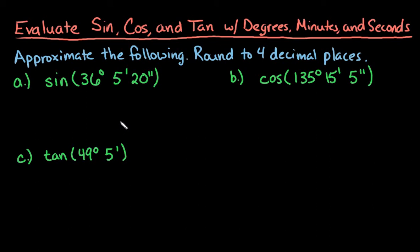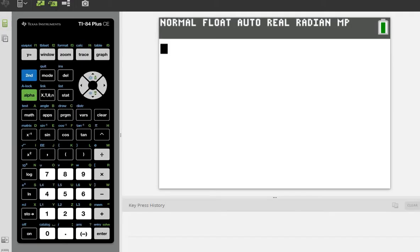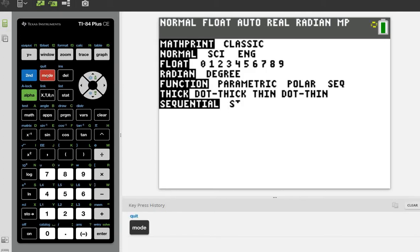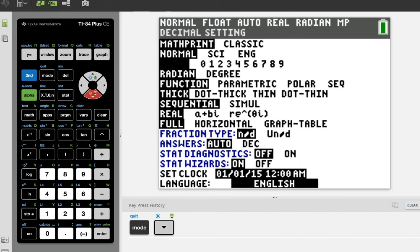Alright, so let's get started. The first one that we're going to find is sine 36 degrees, 5 minutes, and 20 seconds. So what we're going to do is grab our calculator, and we want to check our mode. No matter which calculator you're working with, you always want to check your mode to make sure that you are in degrees.